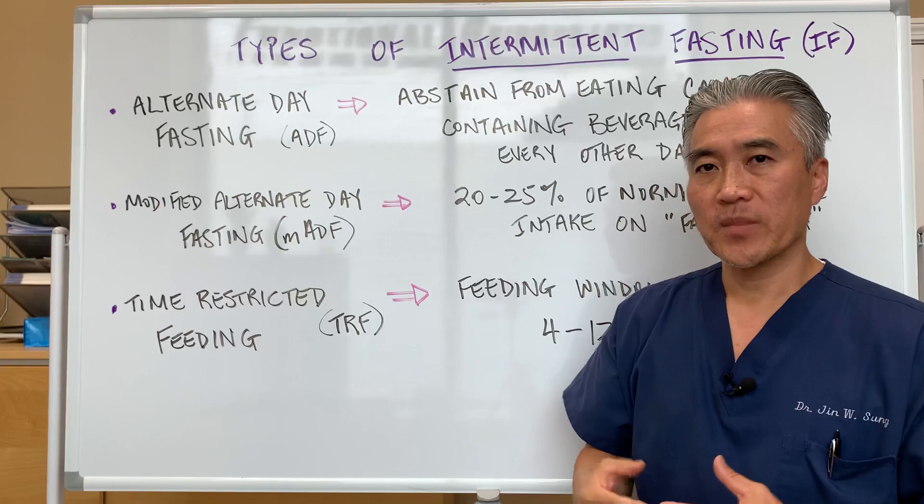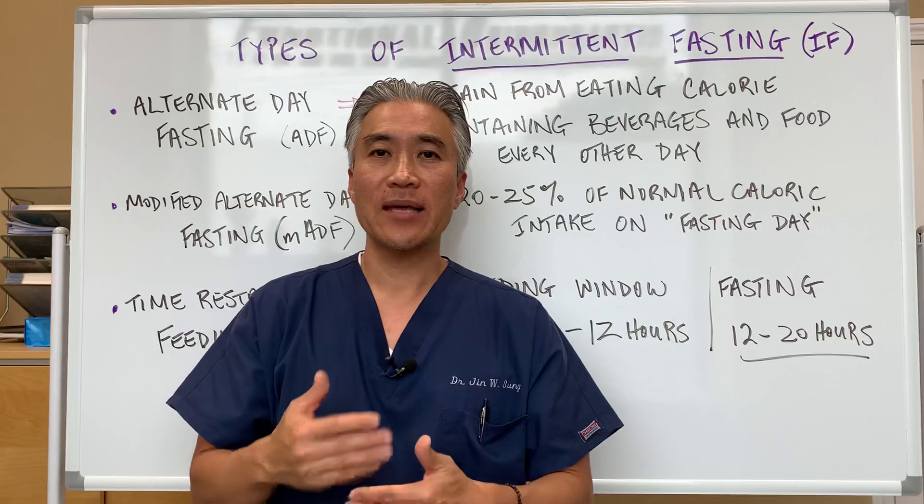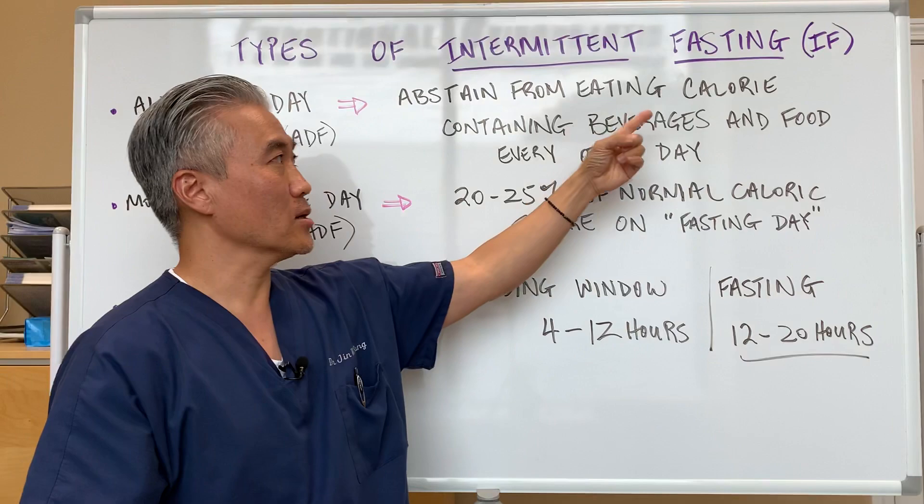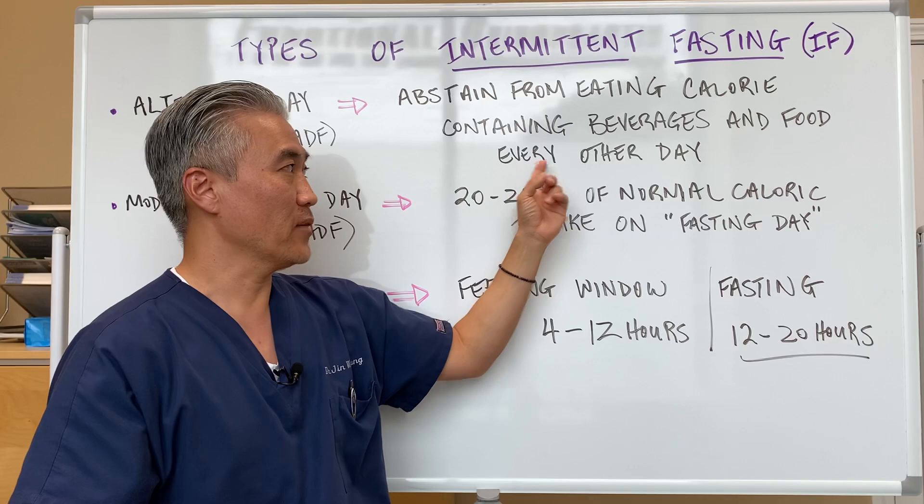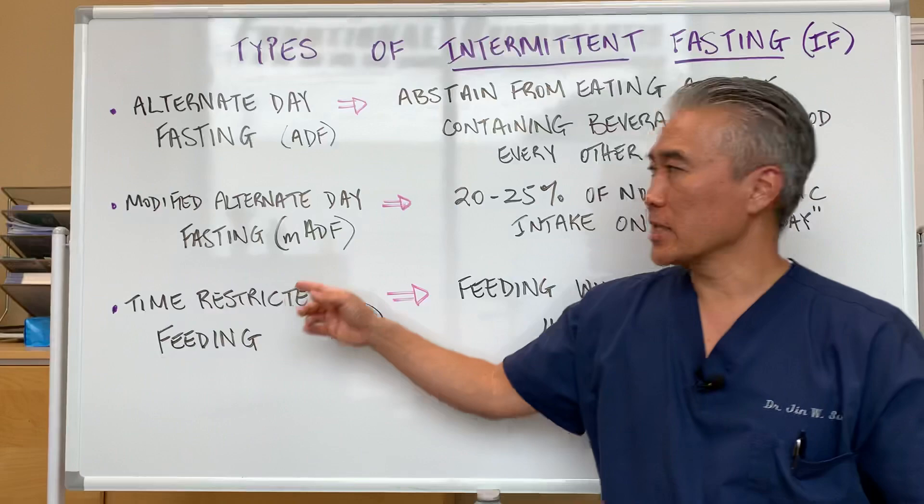Alternate day fasting. This is when you're eating for 24 hours normally, and then the next 24 hours you may only drink water. So you're abstaining from eating any calories, any calorie-containing beverages and food for every other day — alternate days of fasting.